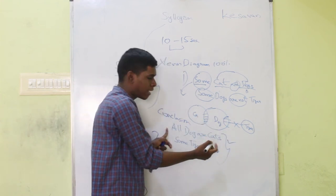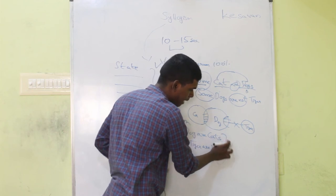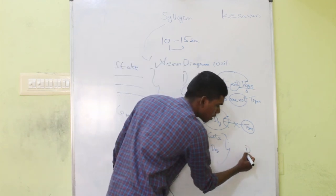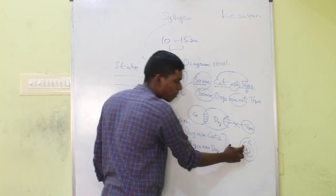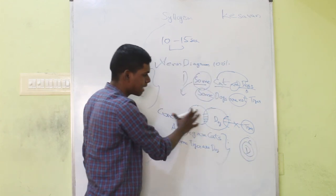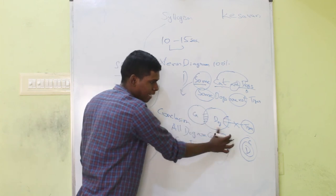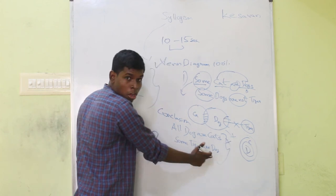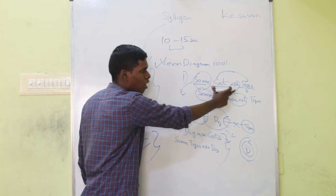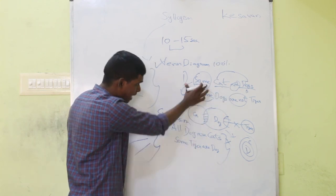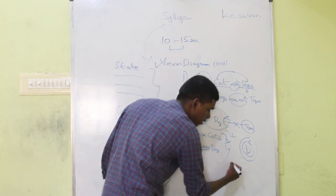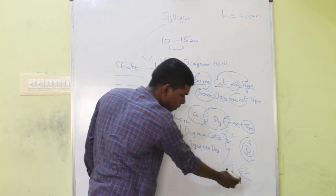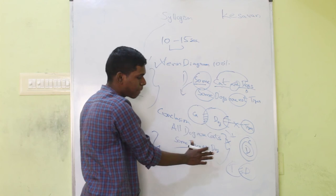For example, 'all dogs are cats' — we draw its corresponding diagram and scan it against the statement diagrams. The pattern does not match the two statement diagrams, so the conclusion is false. Next, 'some tiger or dog' — the keyword is 'some are,' and its corresponding diagram also matches. So again, the conclusion is false. We can solve this in practice in about 5 seconds.